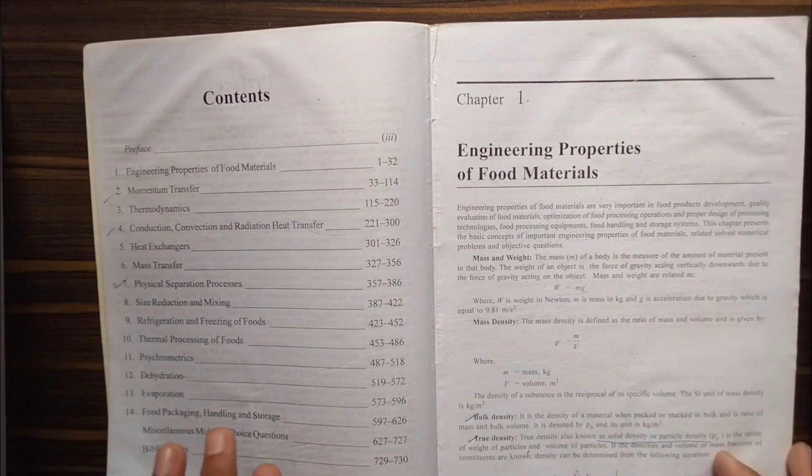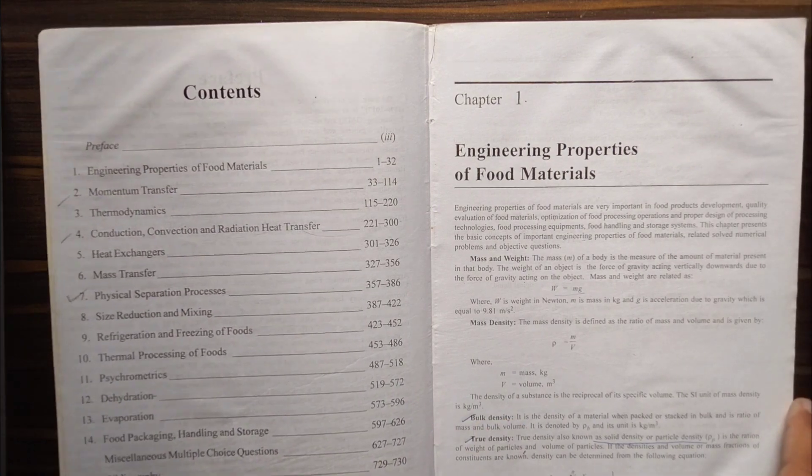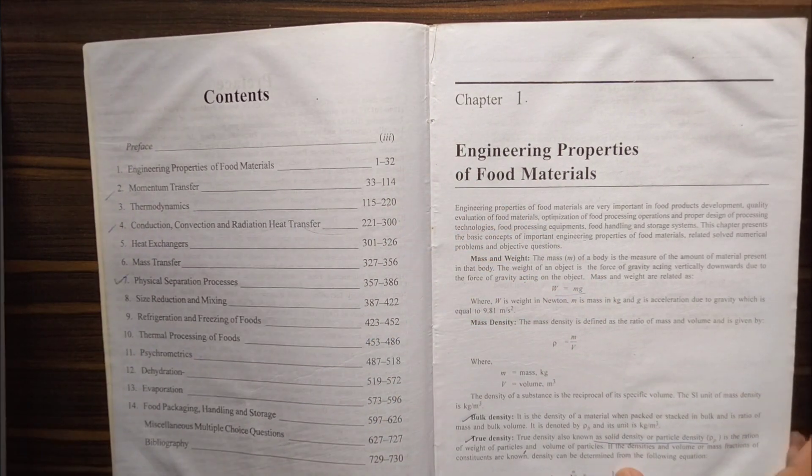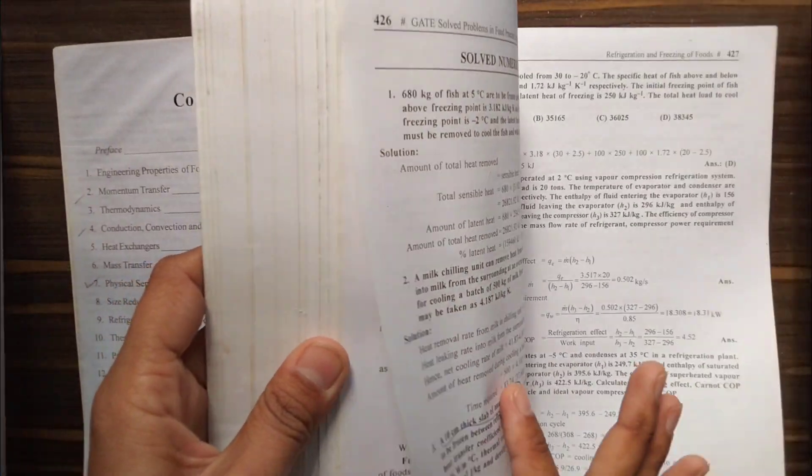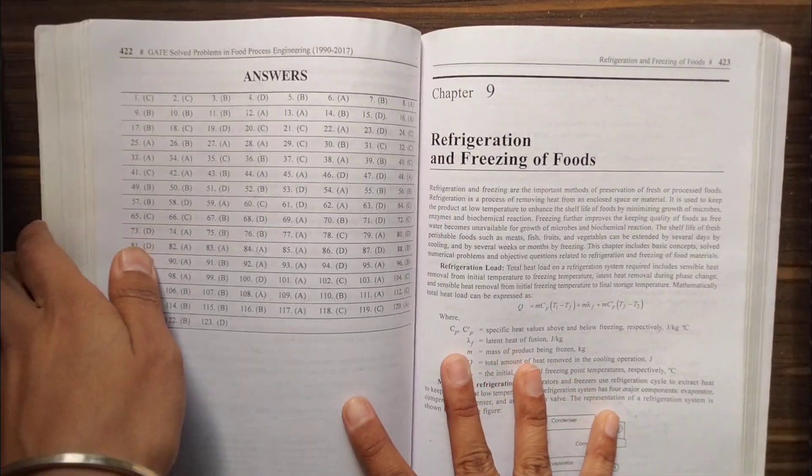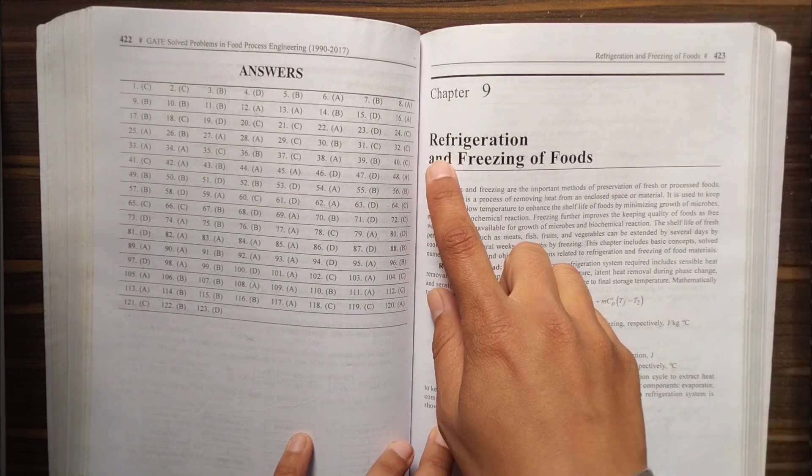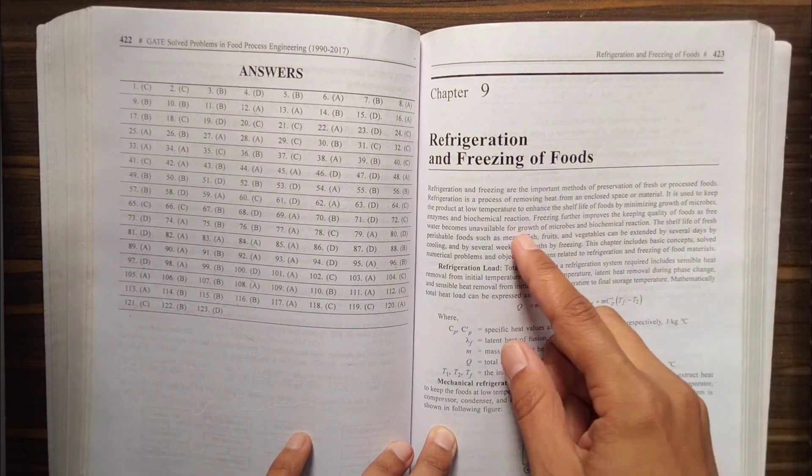The book has 14 chapters and is an excellent resource for practicing numerical problems in food technology. What I like about this book is that it consists of all kinds of numerical problems, including explanations of chapters and MCQs at the end to check your knowledge.